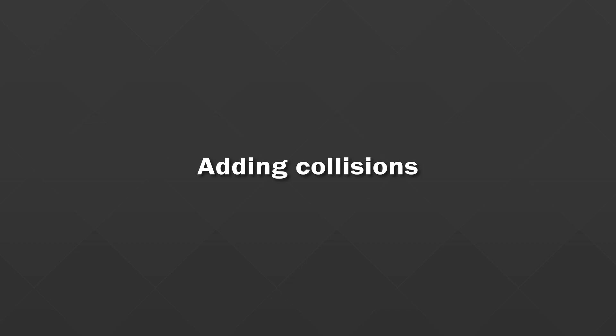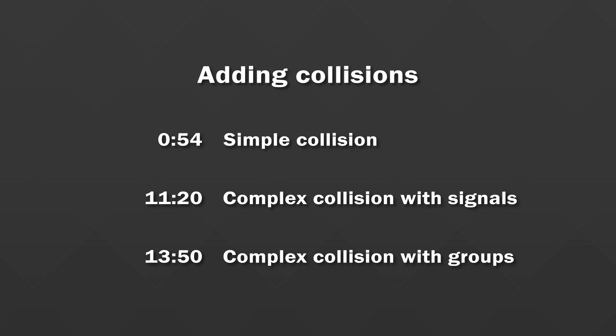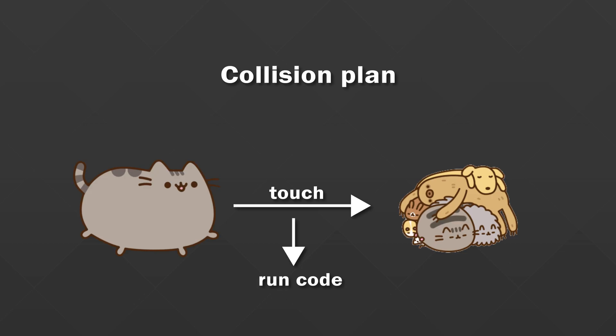I will start doing this in the easiest possible way just to have it done, but once we're done with this I'll add a more complex way of doing it. The main purpose of that is to show you some more ways on how to connect different scenes with each other and exchange information. For our game we don't actually need anything too complicated. All we want is that once the player touches an obstacle, we want to run some code that will end the game.